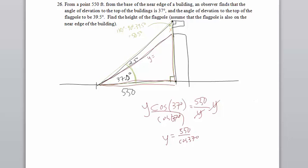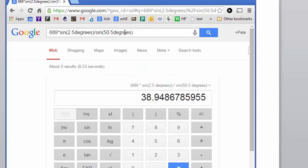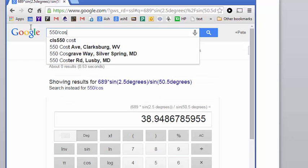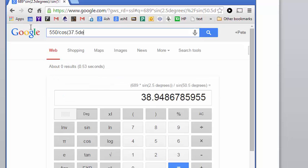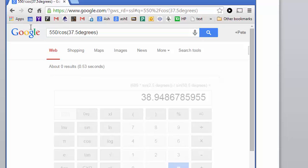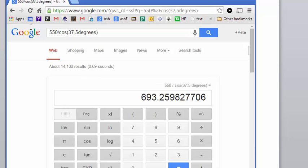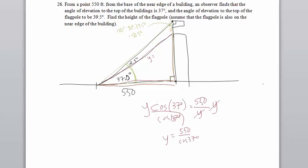So you use your calculators for that, I'll use Google. That is 550 divided by the cosine of 37 degrees, not 37.5, and it gives me 689. So that means this side right here is 689 feet.